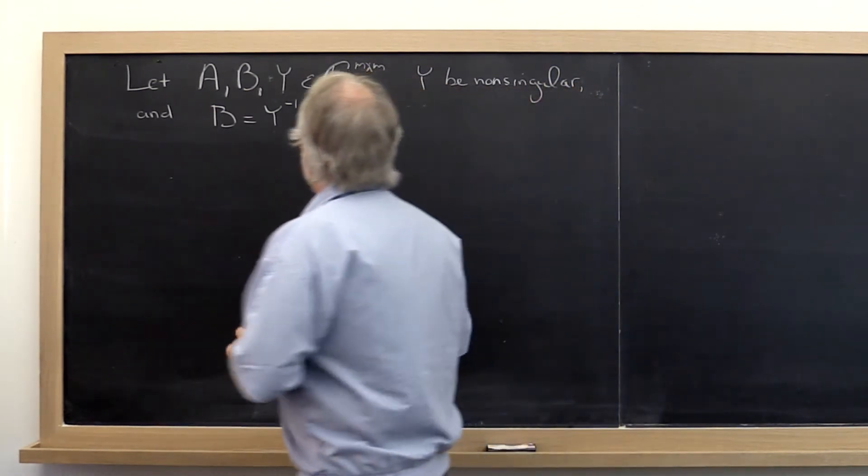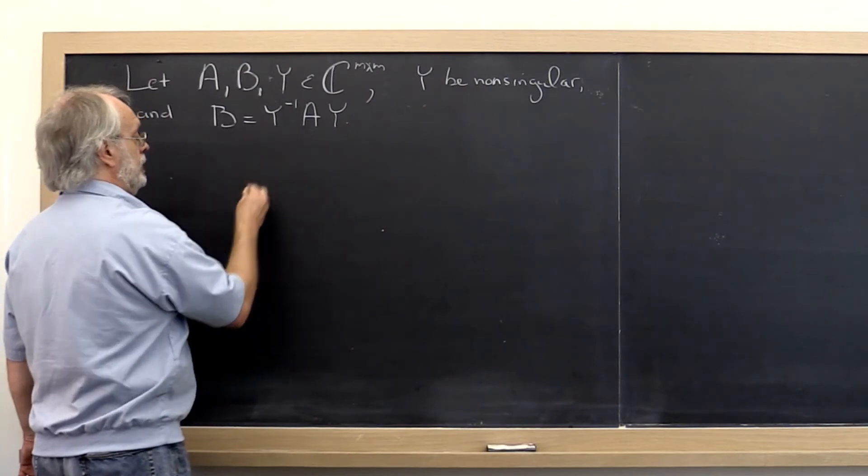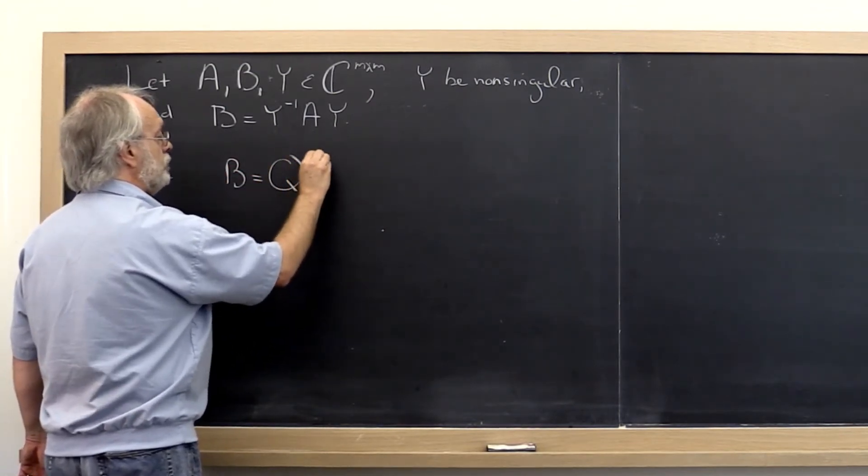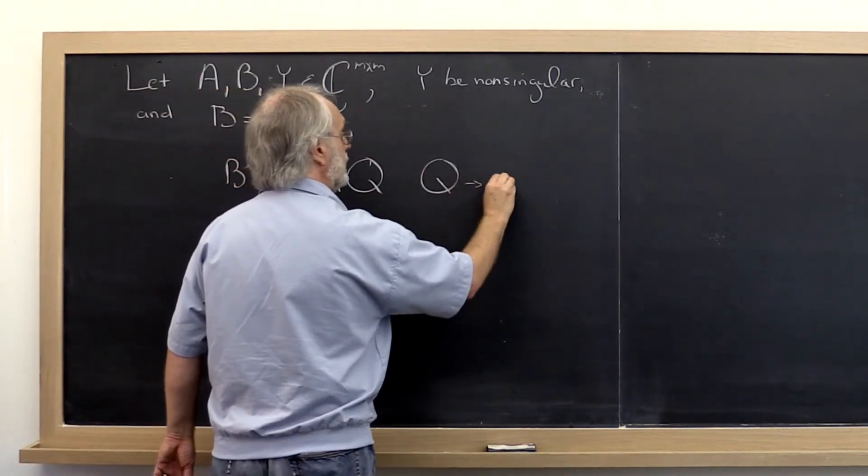So if Y is actually unitary, in other words, if B can be written as Q Hermitian transpose A times Q, where Q is unitary,